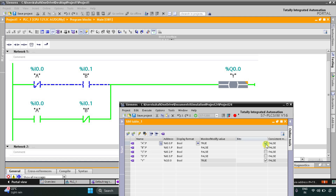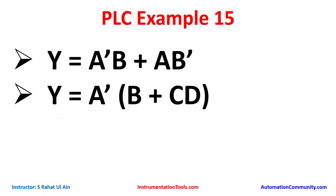Let's look at the second example: y = a'b + cd. Here a' means a will be used as a normally closed contact, connected in series with b. Then b is connected in parallel with cd, and c and d are connected in series with each other. So we are implementing a NOT gate, an OR gate, and an AND gate.